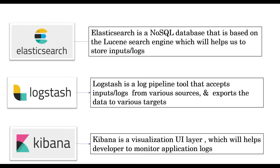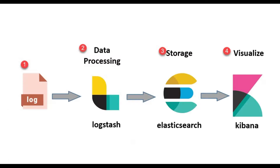Let's understand these three component integrations at a high level. Once we generate a log file from our application, we give that log file to Logstash. Logstash reads those log files and sends them to Elasticsearch, which stores the log data. Then Kibana keeps pulling from Elasticsearch to display that log data in the user interface.